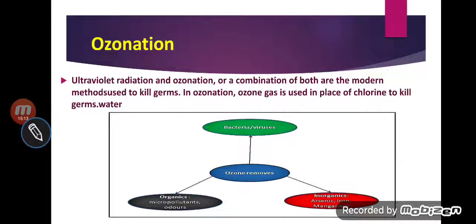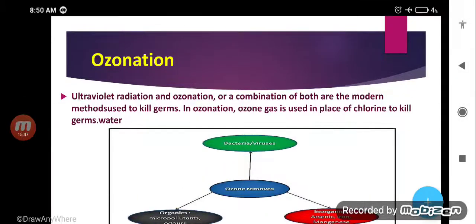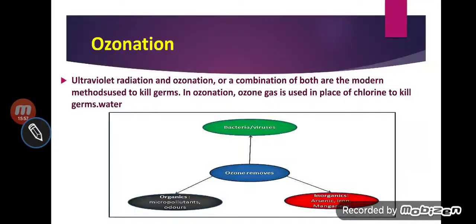Another method is ultraviolet radiation, which is used to kill germs in water. Many of you have seen in TV advertisements that the Pureit system has ultraviolet radiation to help kill germs — this is a modern method. However, it is not practical for use in big cities to clean water at large scale. In big cities, they generally use chlorination. The modern method of chlorination is ozonation, which is used in high-quality filter systems, especially in our houses. These are the processes we can use to kill germs.